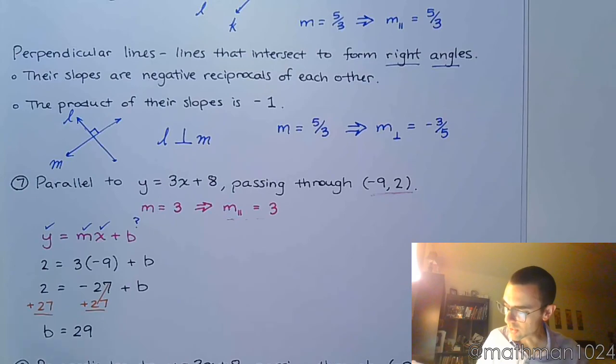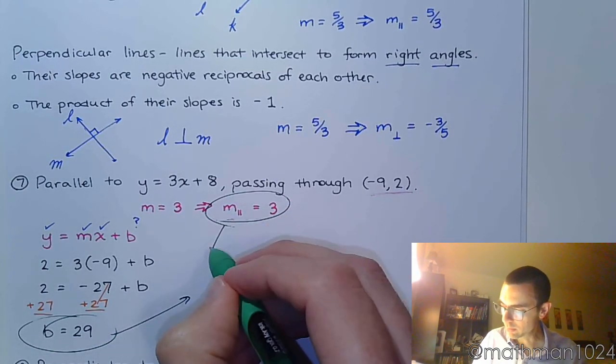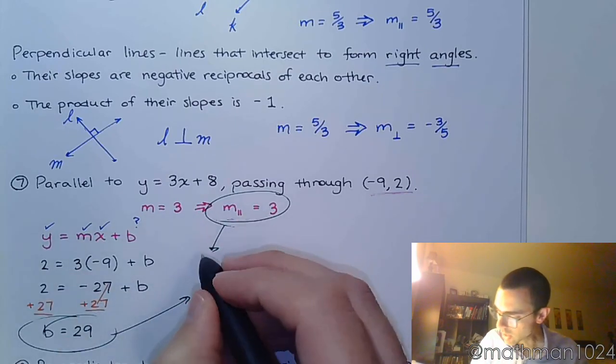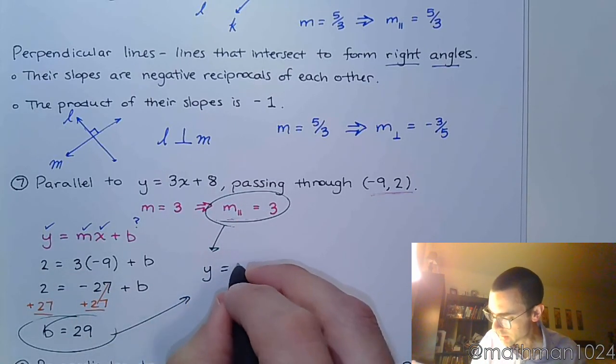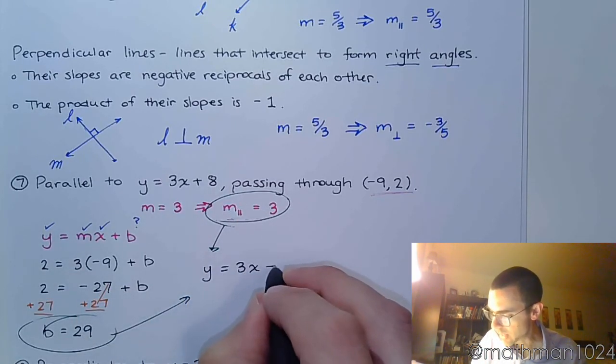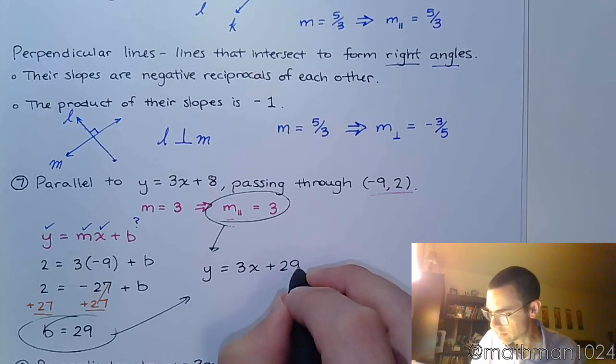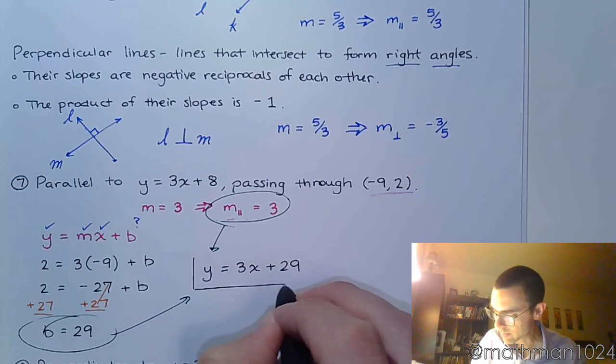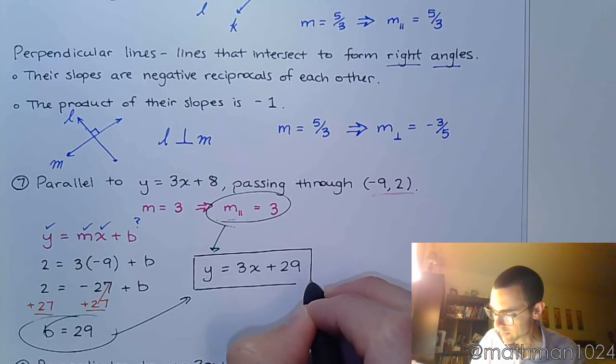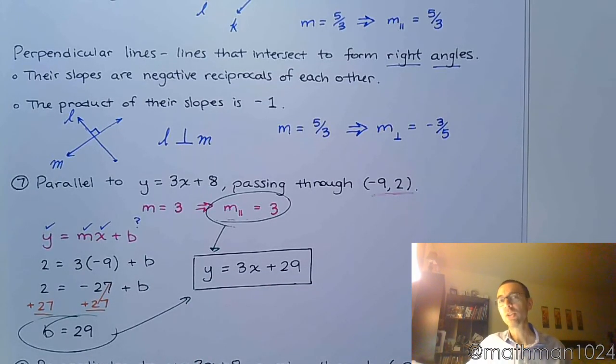So we put these guys together. We put our slope and our b value together to form our equation y equals 3x plus 29. And that's really all there is to it.